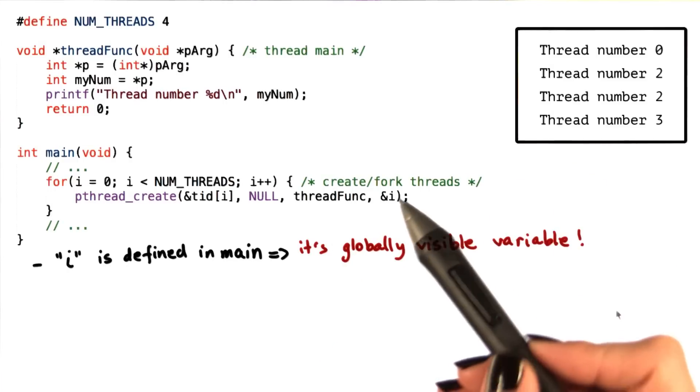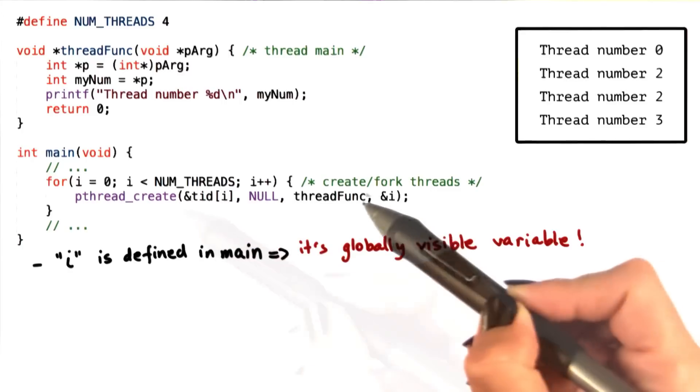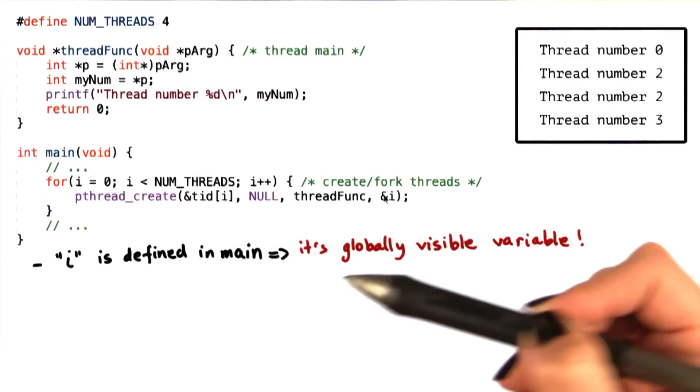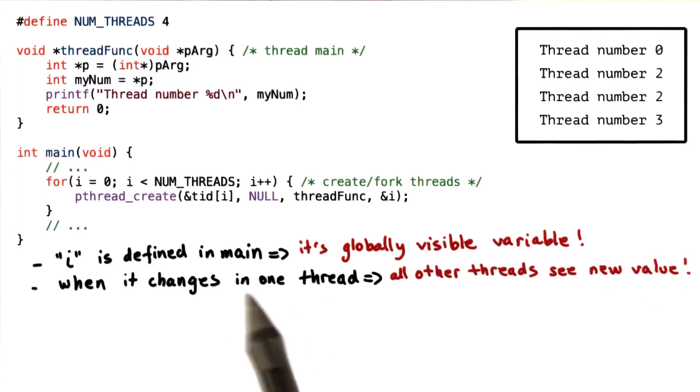From the previous quiz, the problem is that the variable i used in this thread creation operation is a globally visible variable defined in main. When its value changes in one thread, every one of the other threads will see the new value.